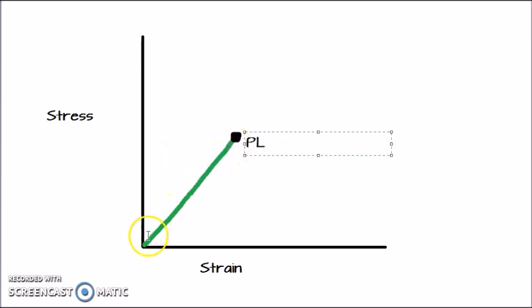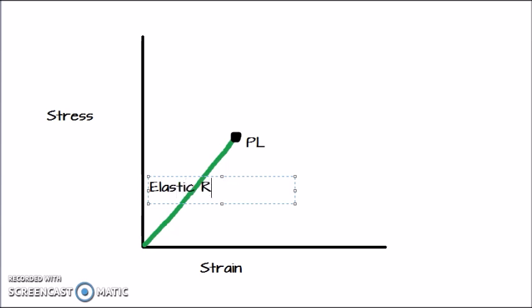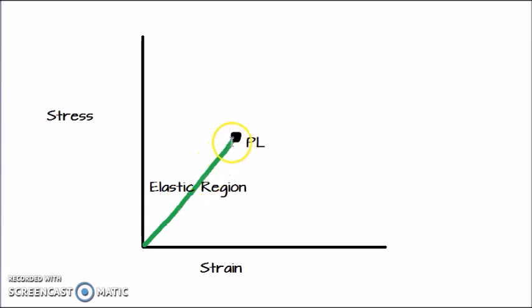This whole green line is the elastic region of the stress-strain graph, so let's label this as elastic region. You know that stress divided by strain gives you a constant which is Young's modulus of elasticity. So this green line is the area where stress is directly proportional to strain — it's a straight line, the elastic region or area of elastic deformation, and it ends at the proportional limit PL.